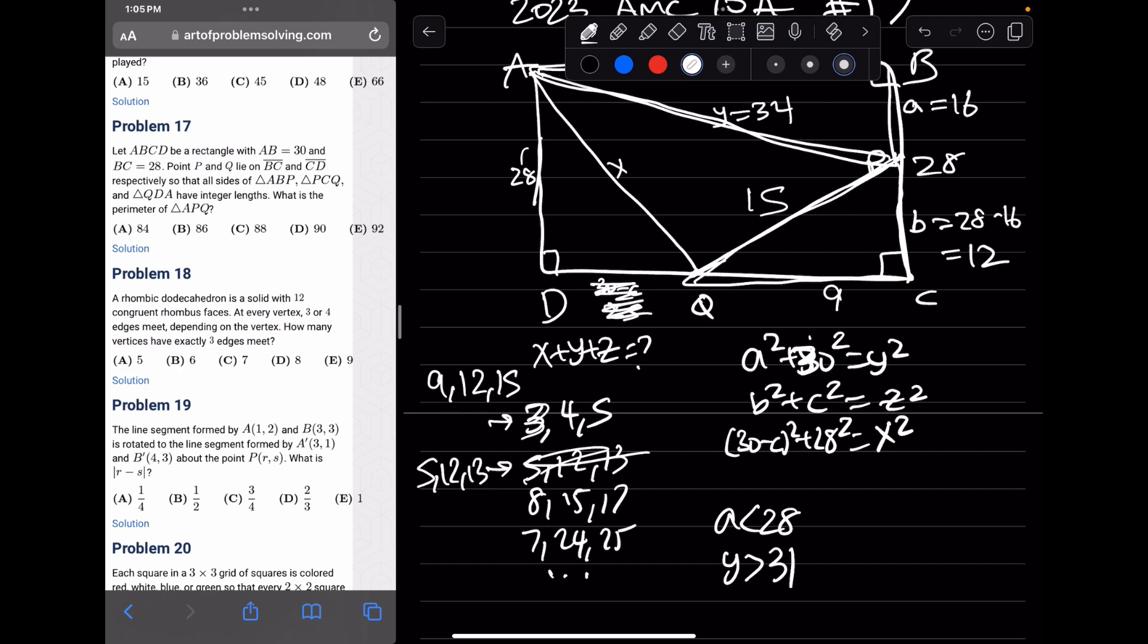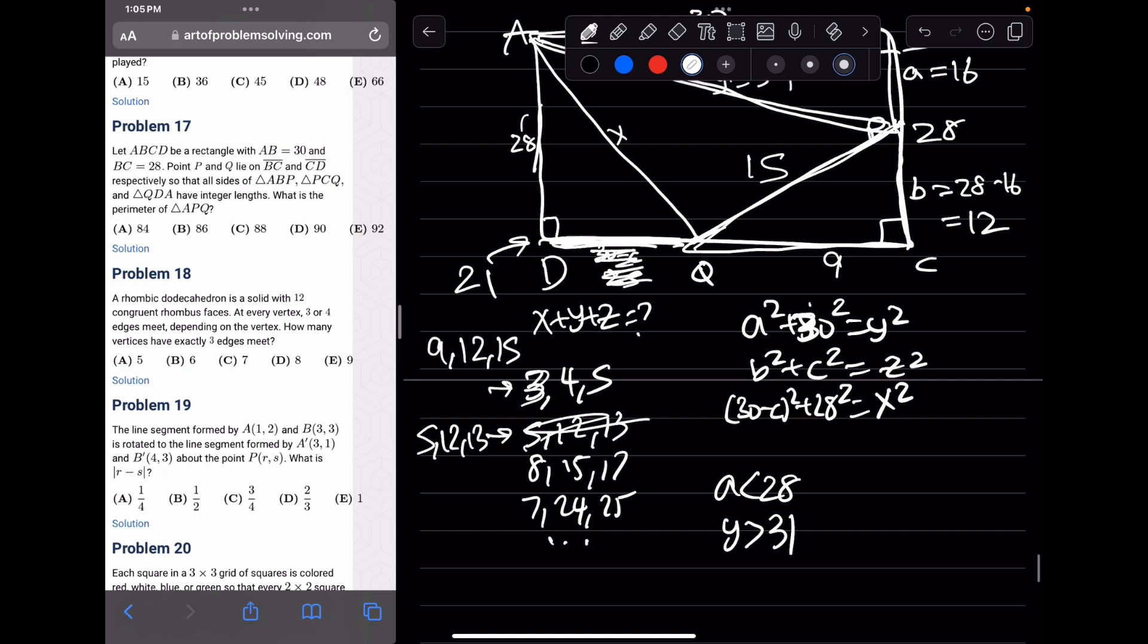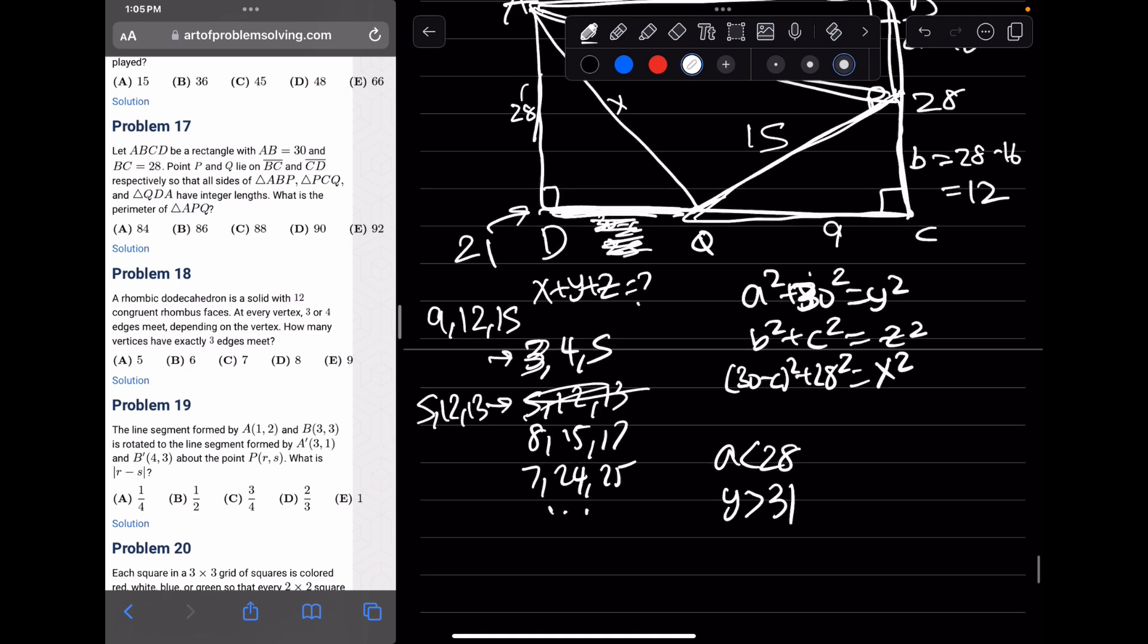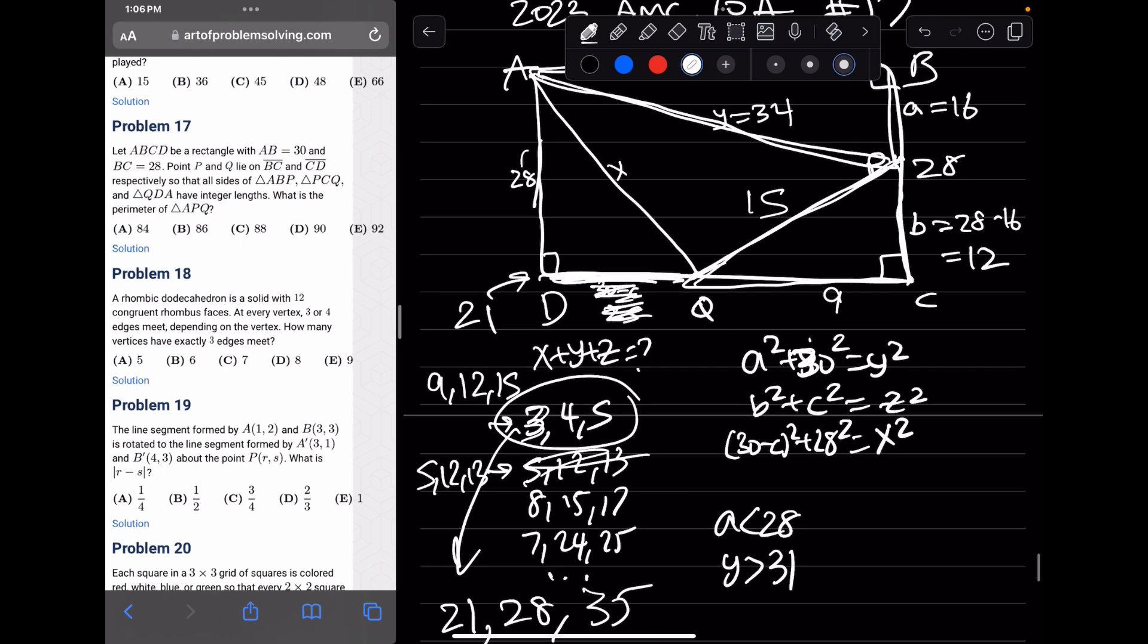So then this means D would be 30 minus 9, which is 21. So this side will be 21 right here. So 21, 28. So can we have 21, 28, and something? We can, right? 3, 4, 5. That works. So if we multiply everything by 7, 3 times 7 is 21. 4 times 7 is 28. 5 times 7 is going to be 35. So then X equals 35.